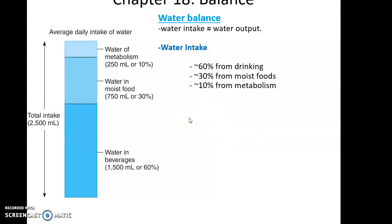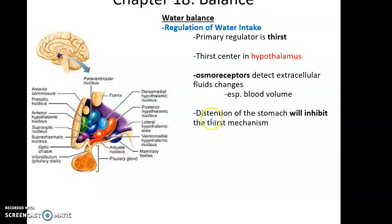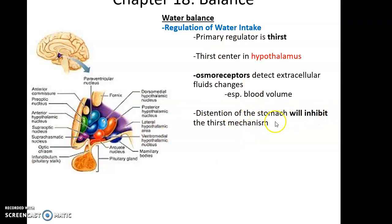For water balance, we want water intake to equal water output. Intake includes water we drink, water from foods, and water generated from metabolism. We can regulate how much water we take in via thirst - the hypothalamus controls our thirst by detecting fluid composition and fluid volume, especially in the bloodstream using osmotic receptors. When fluid volume gets low we feel thirsty, and when the stomach stretches we lose the desire to drink more.